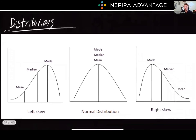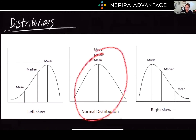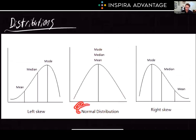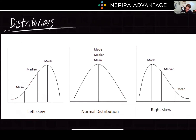Moving on to distributions: a normal distribution is like a bell curve of MCAT scores — most scores are in the middle, decreasing as you move away either lower or higher. Skewed distributions are like income distribution, where a few high earners skew the distribution rightward. In contrast, if a class did poorly on a test with a few exceptions, the distribution would be left-skewed. To help you remember: left skew is like your organic chemistry exams, normal distribution is like the MCAT, and right skew is like income.